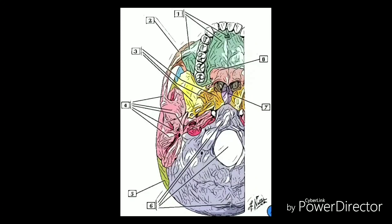The sphenoid bone is situated in the middle of the skull towards the front and forms the rear of the orbit. It has been described as resembling a butterfly due to its wing-like processes. The sphenoid bone is divided into several parts: the body of the bone, two greater wings, two lesser wings, and the pterygoid processes. It is one of the most complex bones in the body due to its interactions with numerous facial bones, ligaments, and muscles. The body articulates with the ethmoid and occipital bones and forms a key part of the nasal cavity. It also contains the sphenoidal sinuses.